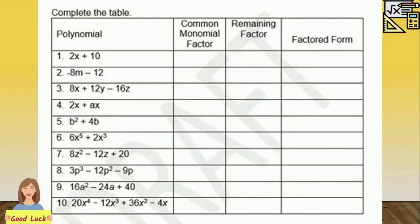For our activity, you need to complete a table and give the common monomial factor, the remaining factor, and the factored form. Number one is done for you. We have 2x + 10. The common monomial factor of 2x + 10 is 2. For the remaining factor: 2x divided by 2 is x, and 10 divided by 2 is 5, so the remaining factor is x + 5. Therefore, the factored form is 2(x + 5).